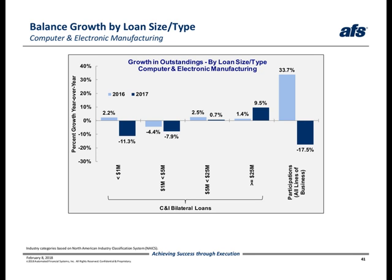At the subsector level, the decline in manufacturing balances was focused heavily in a segment called computer and electronic manufacturing. Many of these companies tend to fall along the larger end of the market, and according to the Bureau of Labor Statistics, this segment has experienced rapid growth in economic activity over the last several years. In terms of recent loan balance declines for this industry, there are two primary explanations from a loan size standpoint. First, the slump in the smaller end ranges deepened, with loans less than $1 million in size and $1 to $5 million in size both having even steeper drops in 2017 versus the prior year. And second, much like at the overall industry level, we saw a sharp reversal in participation balance growth for this subsector where it was negative in 2017, which was probably the leading cause for this subsector's decline.